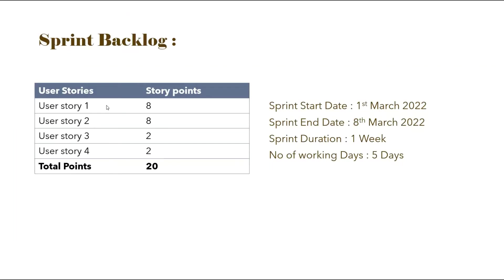Let us consider a sprint backlog which has 4 user stories, and for each user story, story points have been assigned. Totally there are 20 story points. The sprint start date is 1st March 2022 and the sprint end date is 8th March 2022. So the sprint duration will be 1 week, with 5 working days excluding Saturday and Sunday.